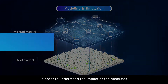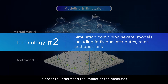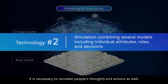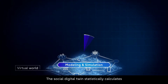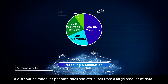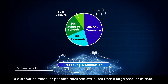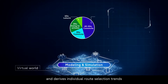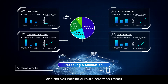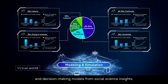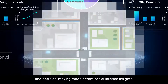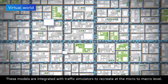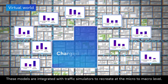In order to understand the impact of the measures, it is necessary to recreate people's thoughts and actions as well. The Social Digital Twin statistically calculates a distribution model of people's roles and attributes from a large amount of data, and derives individual route selection trends and decision-making models from social science insights. These models are integrated with traffic simulators to recreate behavior at the micro-to-macro level.